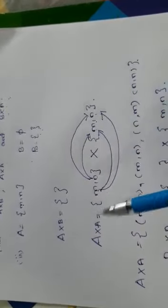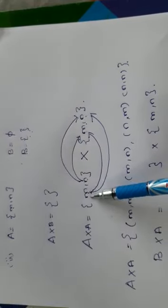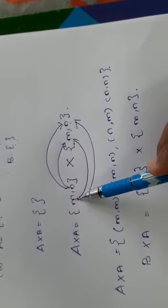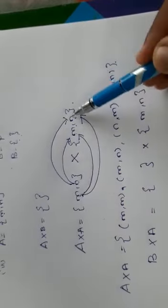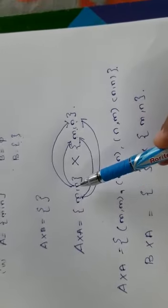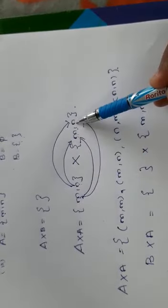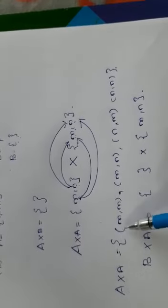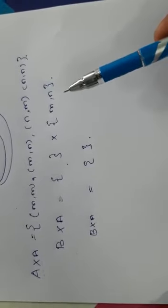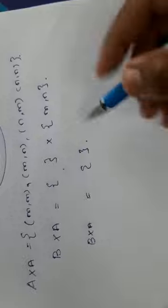For A cross A, write the cross product of A with itself. The first element in the first set is m. With that, write the cross product with the second set which also has m and n. So (m, m) is the first ordered pair and (m, n) is the second. Then take the second element n: (n, m) and (n, n). Therefore A cross A has four ordered pairs. And since B is empty set, B cross A is also null set.